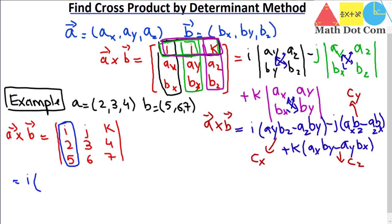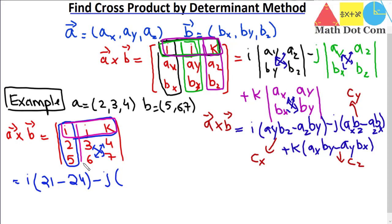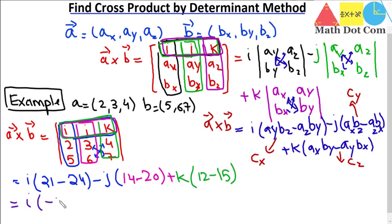We write i and ignore its row and column, then multiply the remaining elements: 3×7 = 21 minus 4×6 = 24. Then minus j, ignoring its row and column, multiply the rest: 2×7 = 14 minus 4×5 = 20. Then plus k, ignoring its row and column, multiply the rest: 2×6 = 12 minus 3×5 = 15. Solving: i(21 − 24) = −3, minus j(14 − 20) = −6, plus k(12 − 15) = −3.